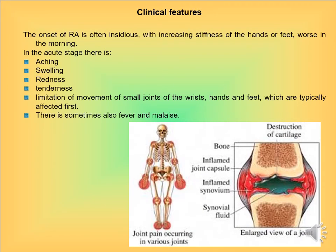The clinical features of rheumatoid arthritis: the onset often coincides with increasing stiffness of the hands or feet, especially in the morning. In the acute state there is aching, swelling, and redness with limitation of movement of the small joints. The hands and feet are typically affected first, and the joint effects are bilateral — not unilateral as in osteoarthritis. There is sometimes also fever and malaise.